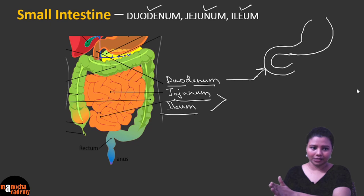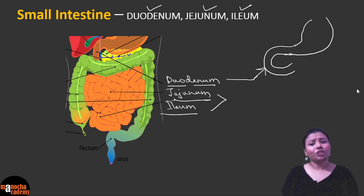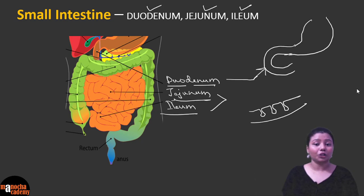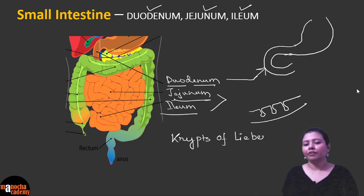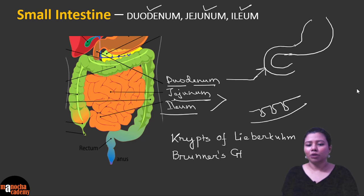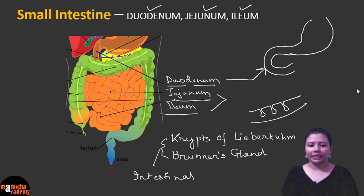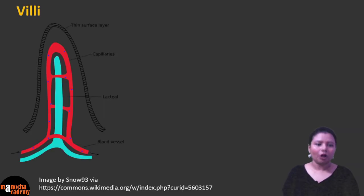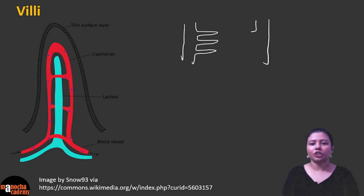The entire small intestine is responsible for digestion and absorption of food. Just like the stomach, the inner wall of the intestine has pits known as intestinal glands — two types: crypts of Lieberkühn and Brunner's glands — present in the duodenum, jejunum, and ileum. For absorption, the inner wall is also thrown into finger-like projections known as villi.